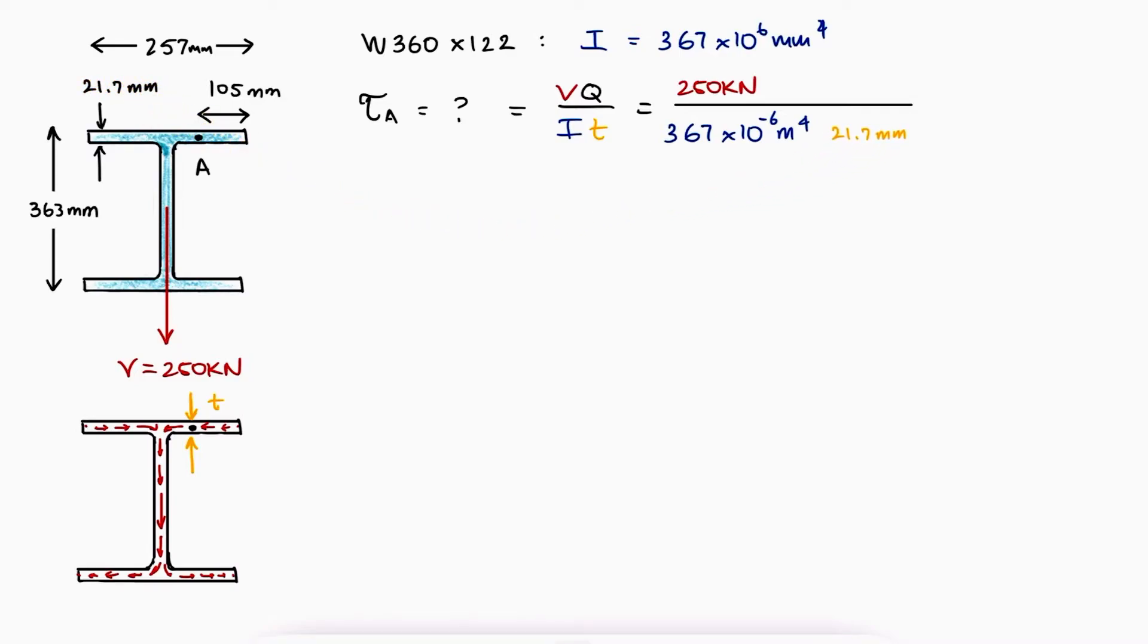Finally, and the most important part of this calculation, is the first moment of area Q. The first moment of area Q will be equal to the shaded area times the distance from the neutral axis to the centroid of that shaded area. You might be tempted to use a horizontal distance from the centroid along the x-axis to the centroid of that shaded area.